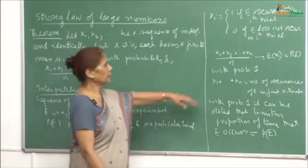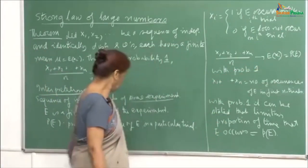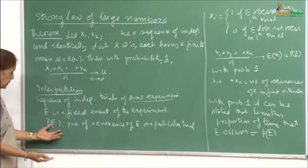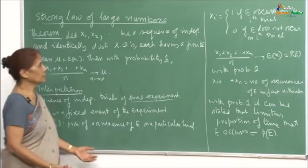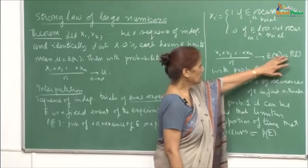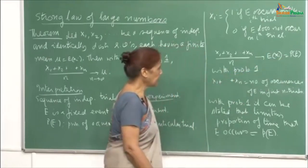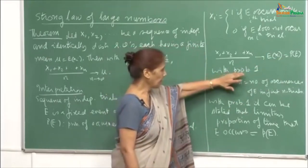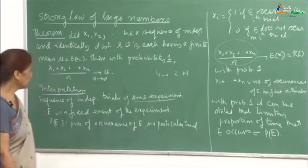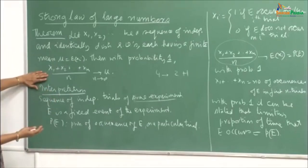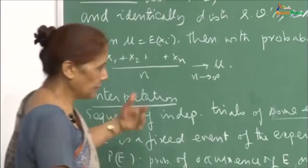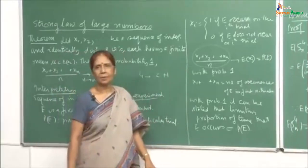This ratio converges to p(E) with probability 1 — it is a certain event. This is an interesting interpretation, and therefore the strong law of large numbers reinforces our concept of probability as defined through relative frequency.